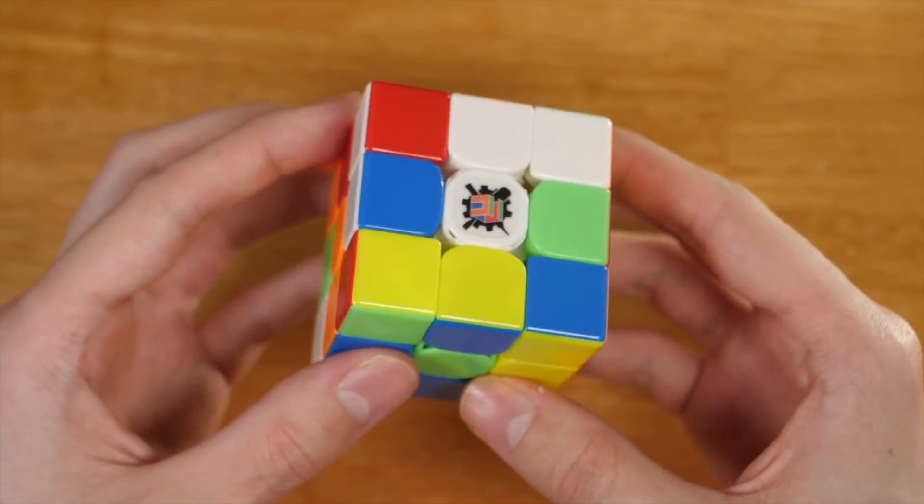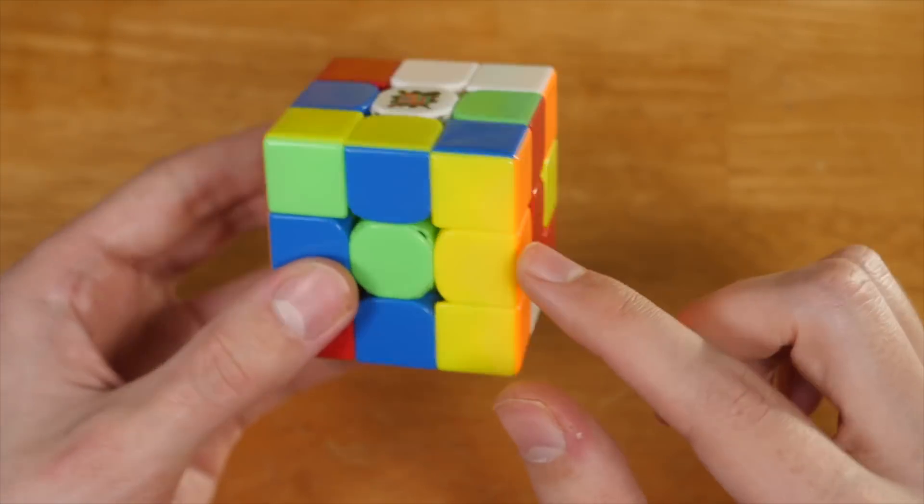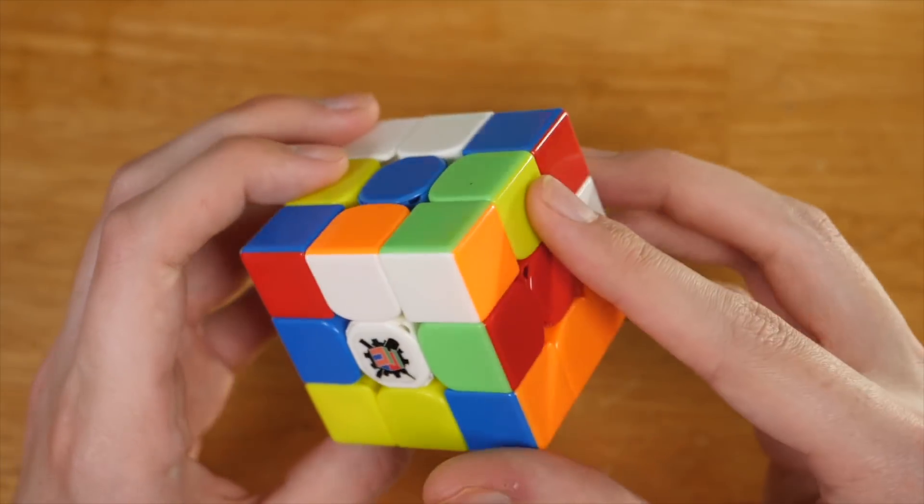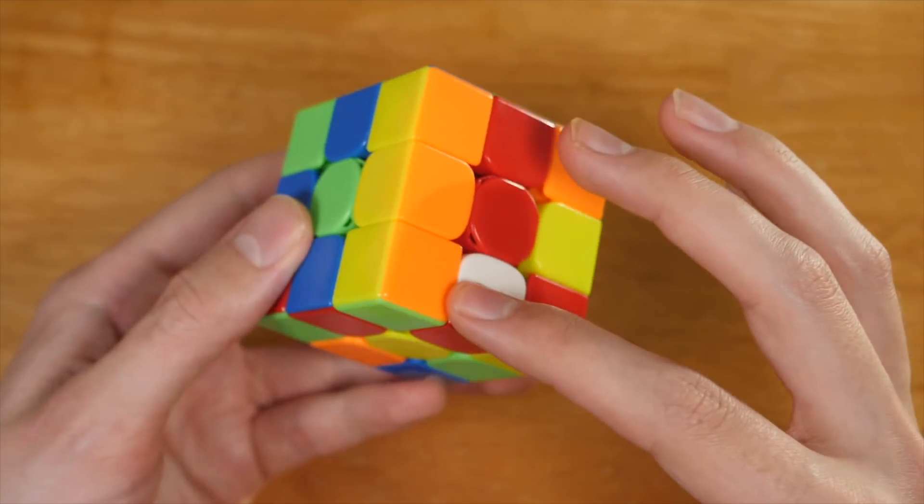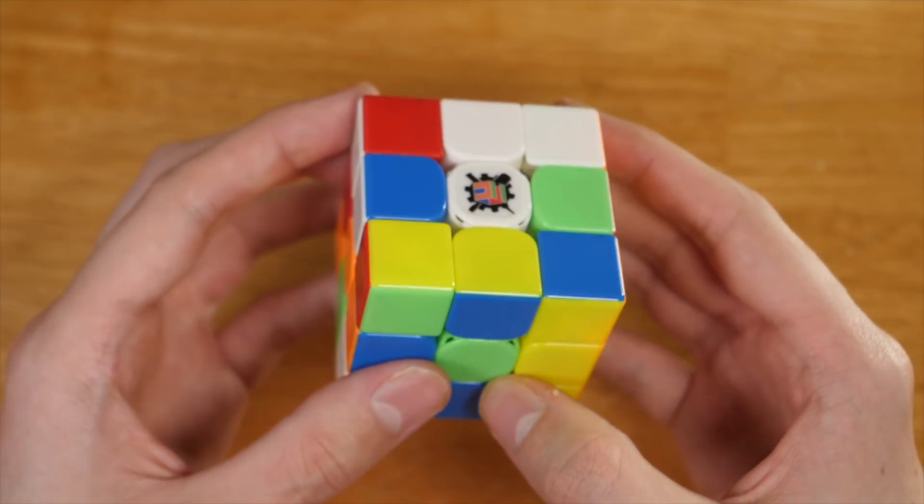We're going to start with yellow cross on this first scramble, noticing that all four pairs are on opposite centers, relatively solved, and we've got this massive yellow and orange block which we'll make use of for the double X-cross.